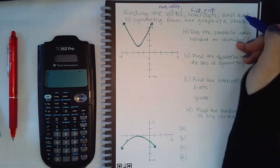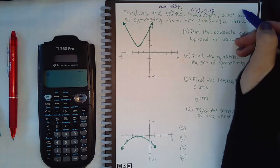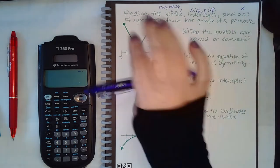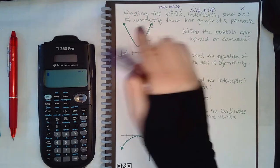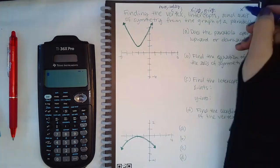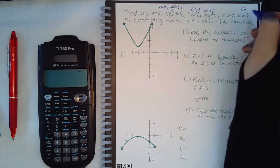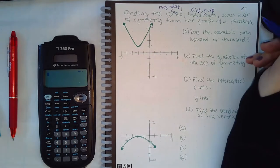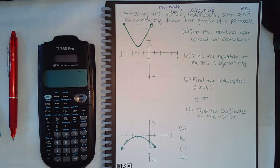The axis of symmetry is a line — it's always going to be a vertical line, because the parabola is symmetric across that vertical line. It equals whatever the x-coordinate of your vertex is. That's what goes on the other side of that equation.